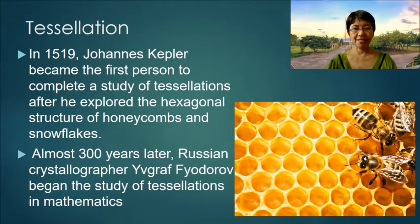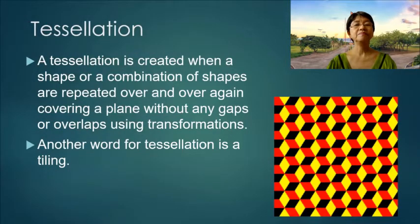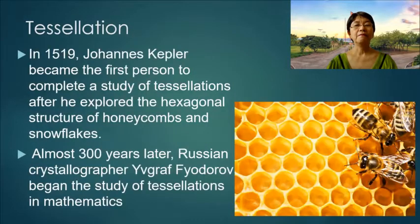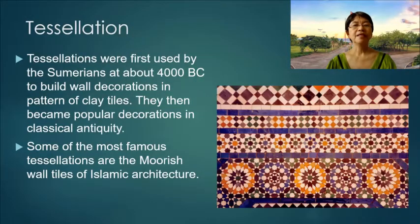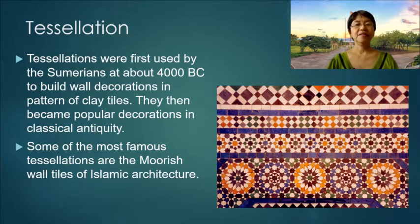Tessellations were first used by Sumerians at about 4000 BC to build wall decorations in pattern of clay tiles. They then became popular decorations in classical antiquity. Some of the most famous tessellations are the Moorish wall tiles of Islamic architecture.